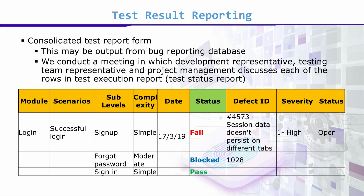We conduct a meeting where Development Representative, Testing Team Representative, and Project Management Representative all sit together, and each row in the test execution status report is discussed. If you mark a test case as failed, development won't accept it easily — and they shouldn't. They will give reasons: either your understanding was wrong, or they didn't know. The test case will either be established as truly failed, or they will provide reasons. Blocked test cases also have their reasons discussed, and passing test cases with no issues won't cause any argument.